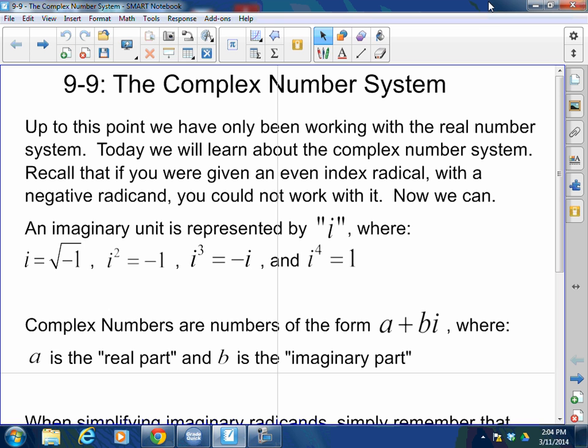Up to this point, we have only been working with real number systems. Today we will learn about the complex number system. Recall that if you were given an even index radical with a negative radicand, you could not work with it. Now we can. Remember I told you, if I have the square root of negative 4, what times itself is negative 4? Nothing.